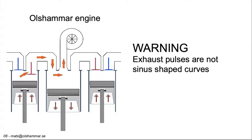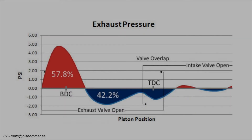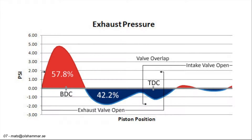Warning: exhaust pulses are not sinus-shaped curves. I have used sinus-shaped curves as an example, but the shape of real-world exhaust curves will depend on many variables. This curve is an example of exhaust pressure — not the flow of exhaust, but the pressure in PSI (pounds per square inch) above and below atmospheric pressure. Note that the exhaust valve opens before the piston reaches BDC (bottom dead center) and it closes after the piston reaches TDC (top dead center). The positive pressure pulse reaches its maximum before the piston reaches bottom dead center, and the positive pressure is soon over, followed by negative pressure in the exhaust. The high positive pressure at the start is created when new exhaust from the cylinder accelerates into the exhaust manifold where it is blocked by old exhaust that is standing still.